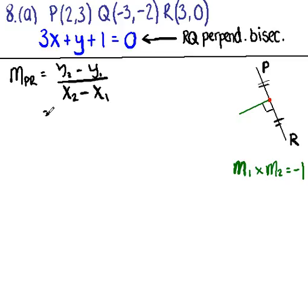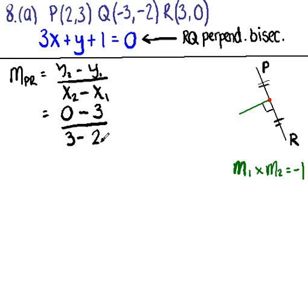Substituting in our values — remember this time we're working with points P and R. So y2 is 0, minus y1 which is 3, divided by x2 minus x1, so x2 is 3 take away x1 which is 2. That gives us 0 minus 3, which is minus 3, and 3 minus 2, which is 1. So minus 3 over 1 — the gradient of PR is minus 3.